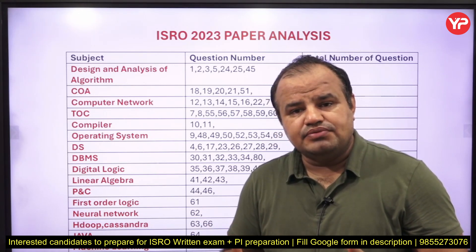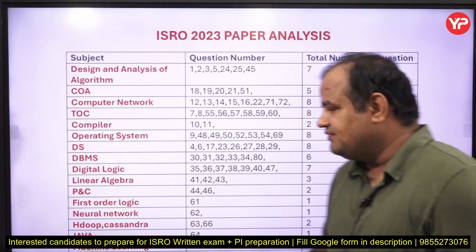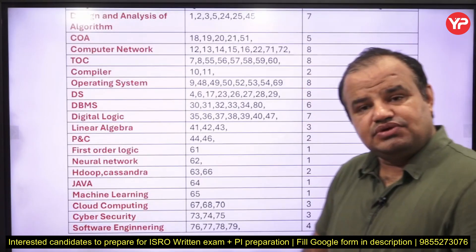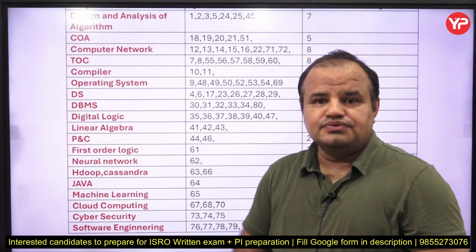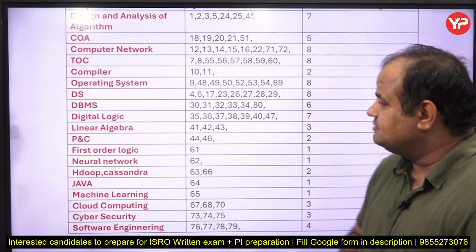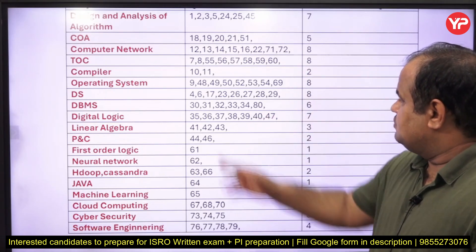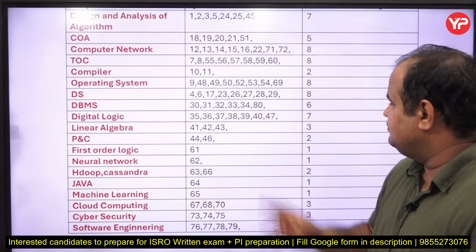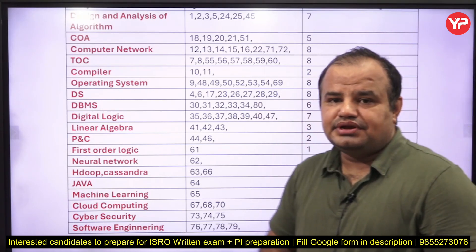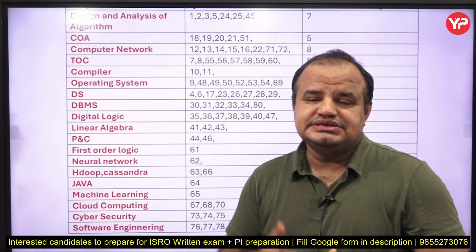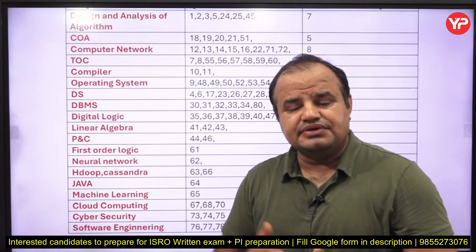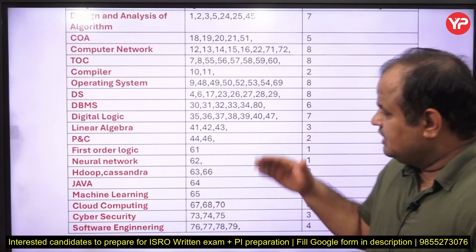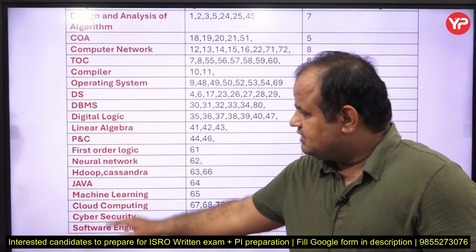In DBMS, SQL is very important — two or three questions every time come from SQL — so there are six total questions from DBMS. Digital logic is again a very important topic, like COA and data structures and algorithms. These are the important subjects in operating system as well.